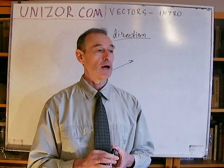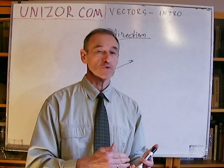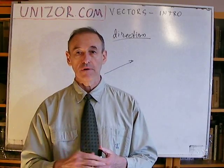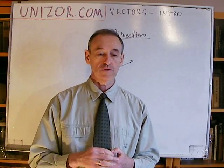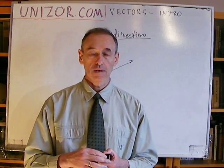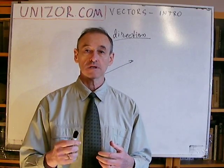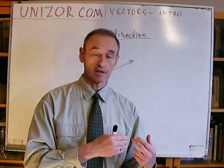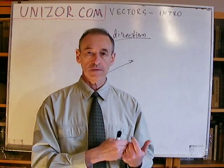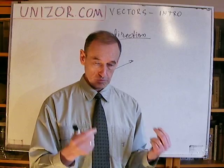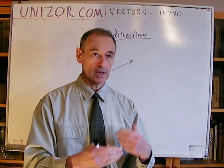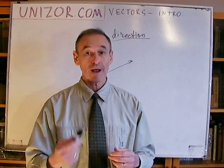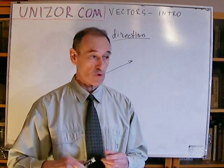If you combine the speed of movement — the absolute value of speed and direction — you get another interesting term, which is velocity. Velocity is basically a vector which combines the quantitative side of the movement, how fast you move, and the direction of the movement, so where you are moving.